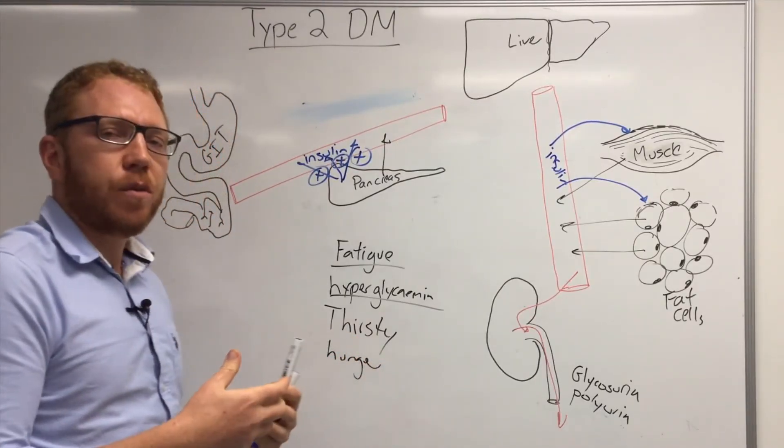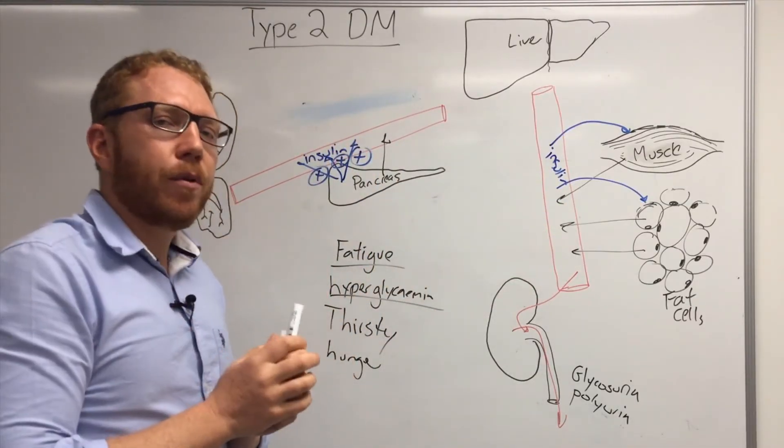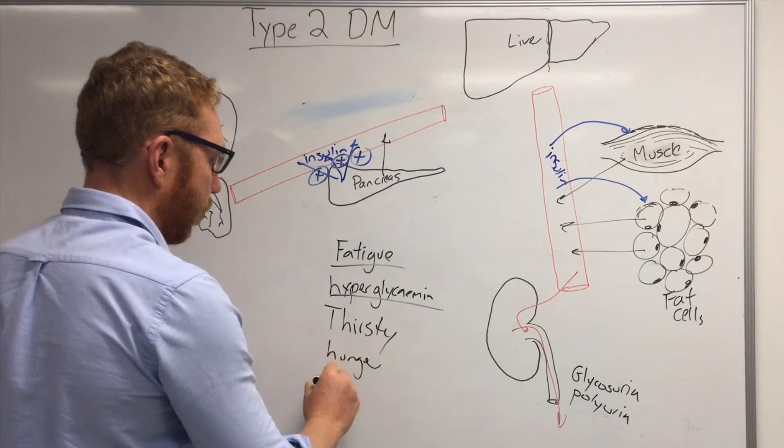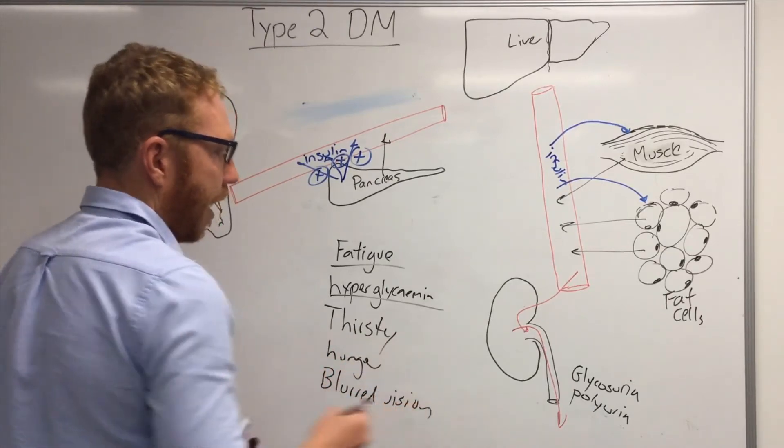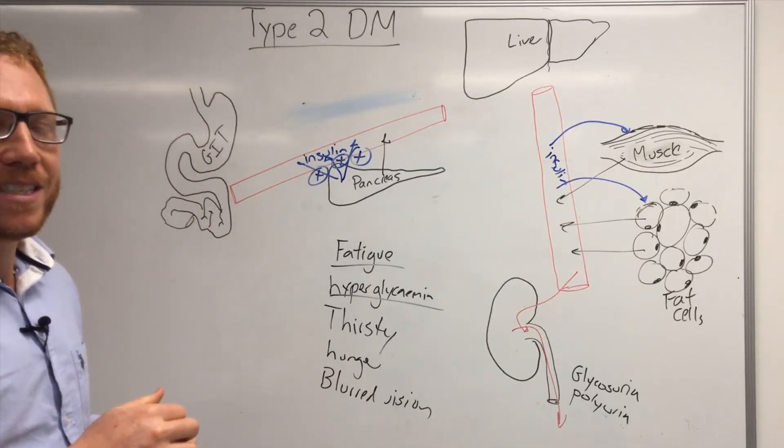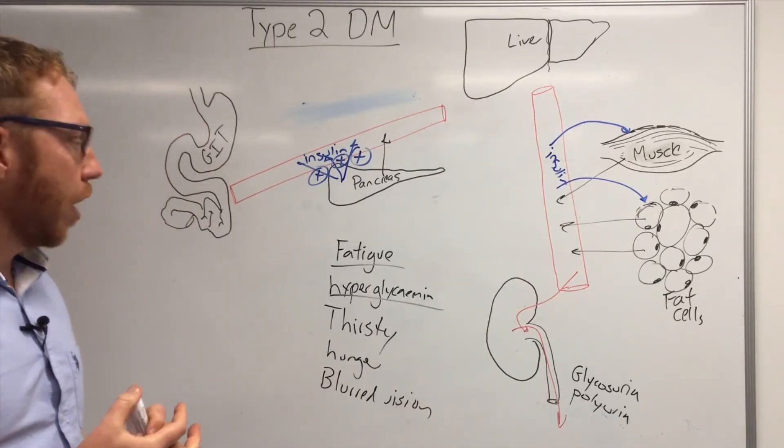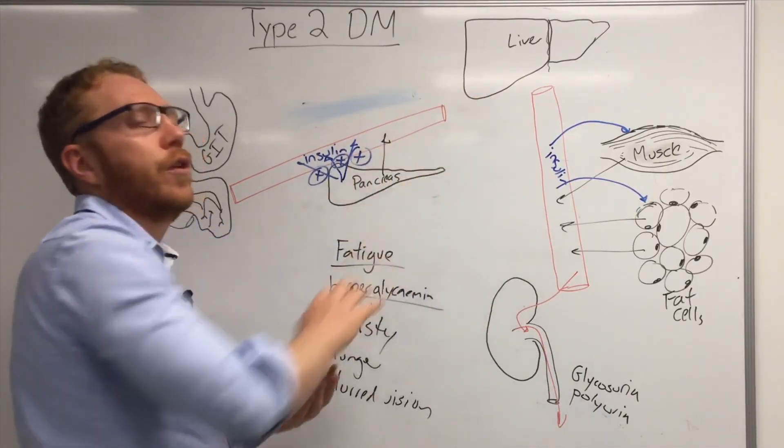But the other effect could be that a huge amount of sugar could affect the eyes and the person might also develop blurred vision. And so these are generally the most common presentations with the early stages of type 2 diabetes. A lot of it's driven just by the high amounts of sugar in the blood.